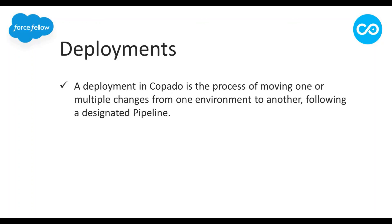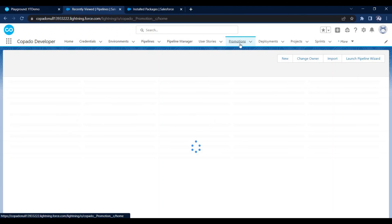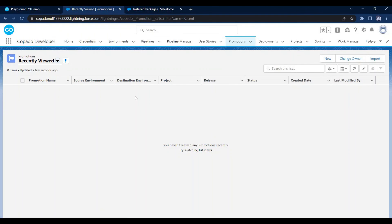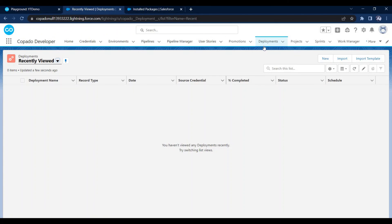The promotion branch is an exact copy of the destination branch, and Copado merges all user story metadata changes into that promotion branch — ensuring there is no impact on the destination branch. Next we have Deployments. A deployment in Copado is the process of moving changes from one environment to another. Deployments are created from promotions — whatever code and metadata is in the promotion gets deployed via the deployment record, which we can use to track status. In the next video I will show how to create promotions and use them in deployments.